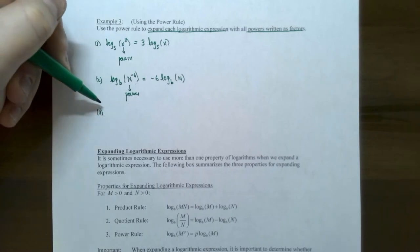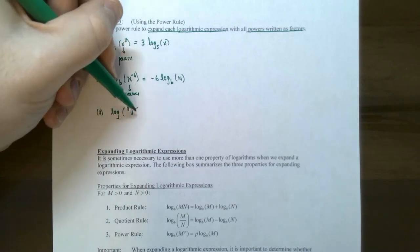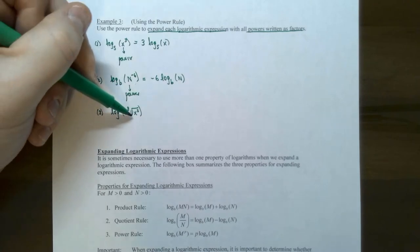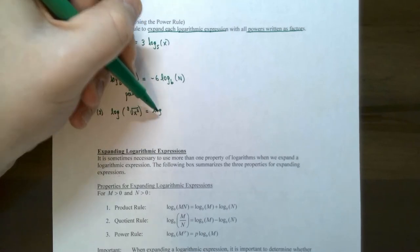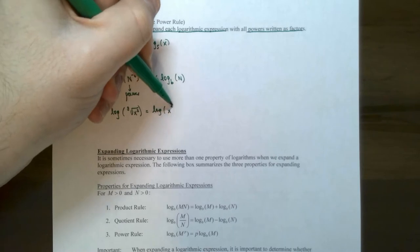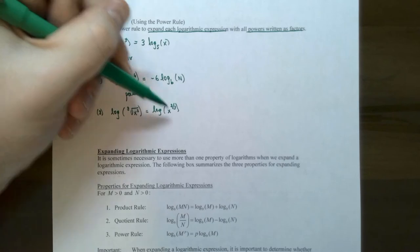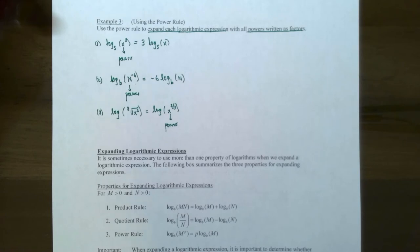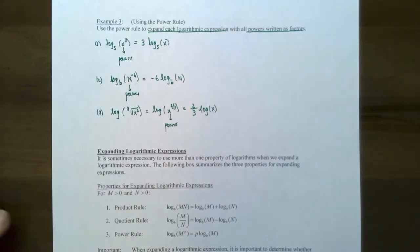Number three: log of the cube root of x squared. This is log base ten of a radical expression. Remember, radicals can be rewritten as rational exponents — the cube root of x squared becomes x to the two-thirds. Now use the power rule: bring two-thirds to the front as a coefficient, giving two-thirds times log of x. That cannot be simplified further. This gives you an idea of how to use the power rule — you need a power inside the logarithm, and sometimes you rewrite the radical first.